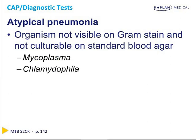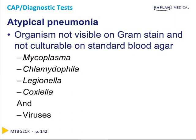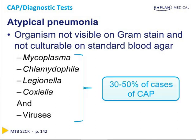Mycoplasma, Chlamydia, Legionella, Coxiella, and viruses all fall into this category. Importantly, while we can't grow them out on standard blood agar, all of these bugs result in 30–50% of cases of community-acquired pneumonia.